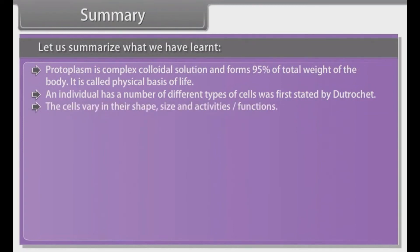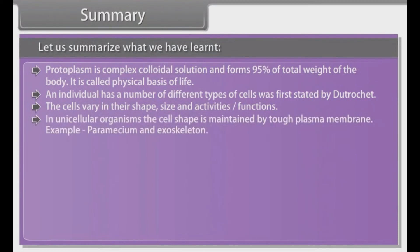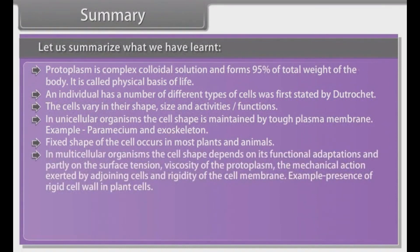The cells vary in their shape, size, and activities or functions. In unicellular organisms, the cell shape is maintained by a tough plasma membrane — for example, paramecium and exoskeleton. Fixed shape of the cell occurs in most plants and animals. In multicellular organisms, the cell shape depends on functional adaptations and partly on the surface tension, viscosity of the protoplasm, mechanical action exerted by adjoining cells, and rigidity of the cell membrane — for example, the presence of a rigid cell wall in plant cells.